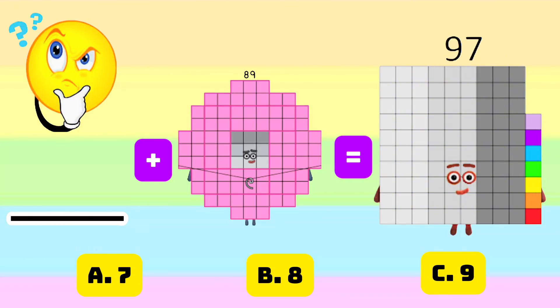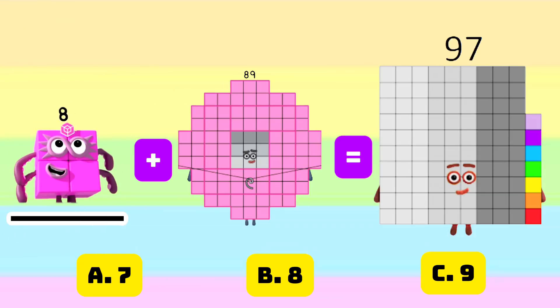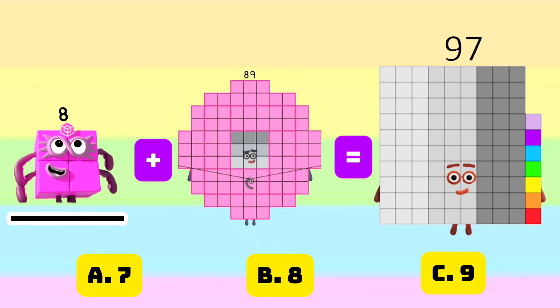And the right answer is letter B, 8. 8 plus 89 is equals to 97.